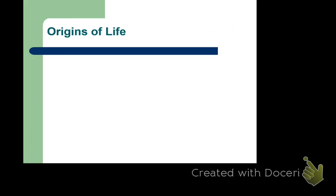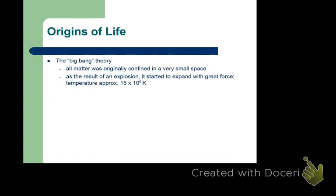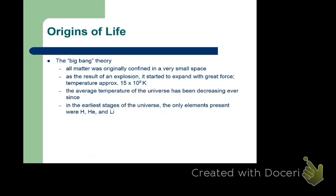Briefly on origins of life: the Big Bang Theory posits all matter originated from an infinitesimally small point, then expanded over long periods of time, with temperature decreasing ever since. In the very beginning, only the three simplest elements existed — hydrogen, helium, and lithium — and fusion reactions can combine atoms to form heavier elements, releasing neutrons or positrons via thermonuclear reactions.